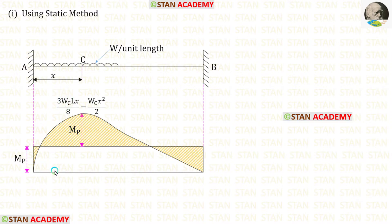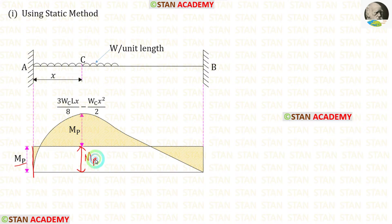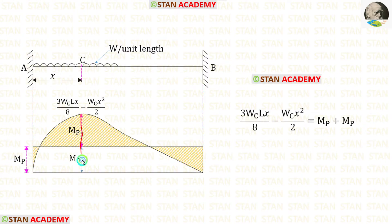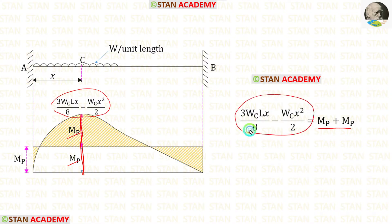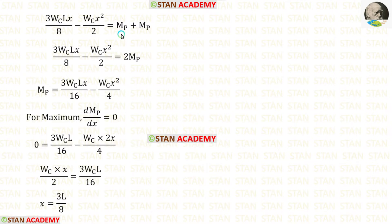In this beam during collapse, we will have plastic hinges here, here, and here. If this height is Mb, this height also should be Mb. The total height should equal the ordinate expression: Mb + Mb = (3wc·x·L/8) − (wc·x²/2). So 2Mb equals that expression.